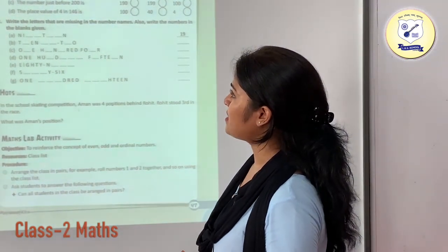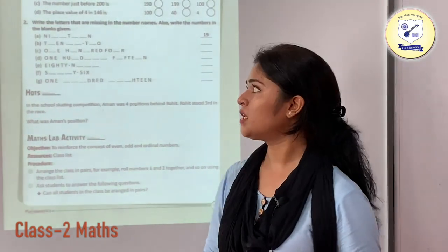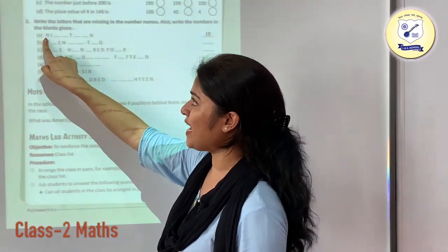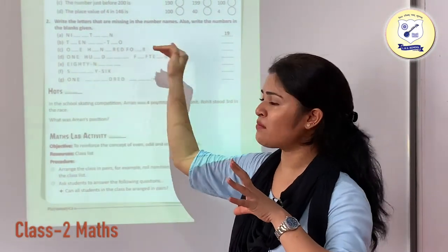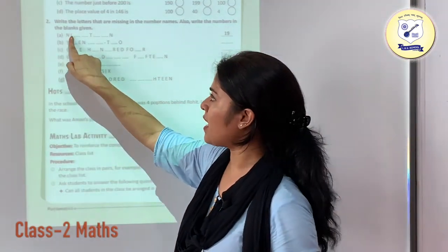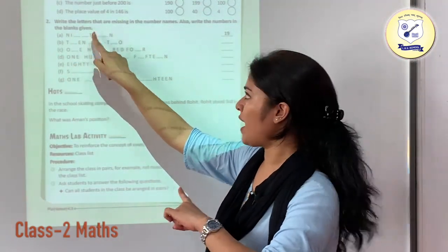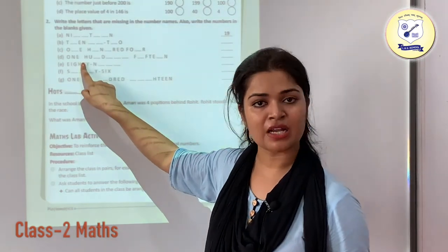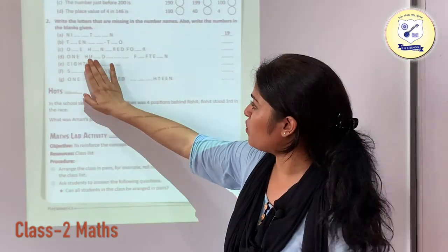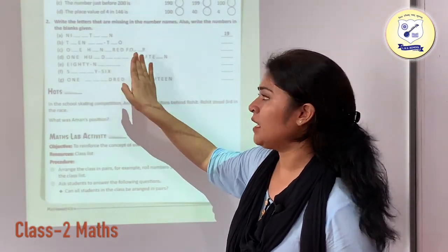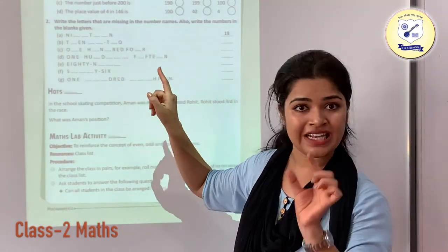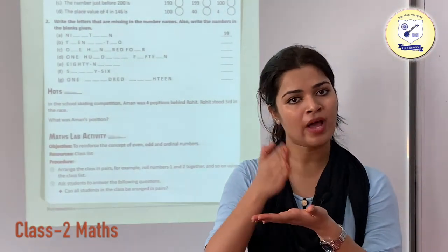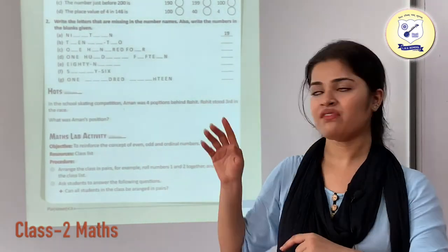Write the letters that are missing in the number names, and write the numbers in the blank given. For example, here it is 'Ni...' — since this is one number, this is going to be NINETEEN, and the number is 19. Similarly, this is 1 followed by the place value of 100 — so this is ONE HUNDRED. After that we have FIFTEEN, so the number formed is 115. We write 115 in front of it.